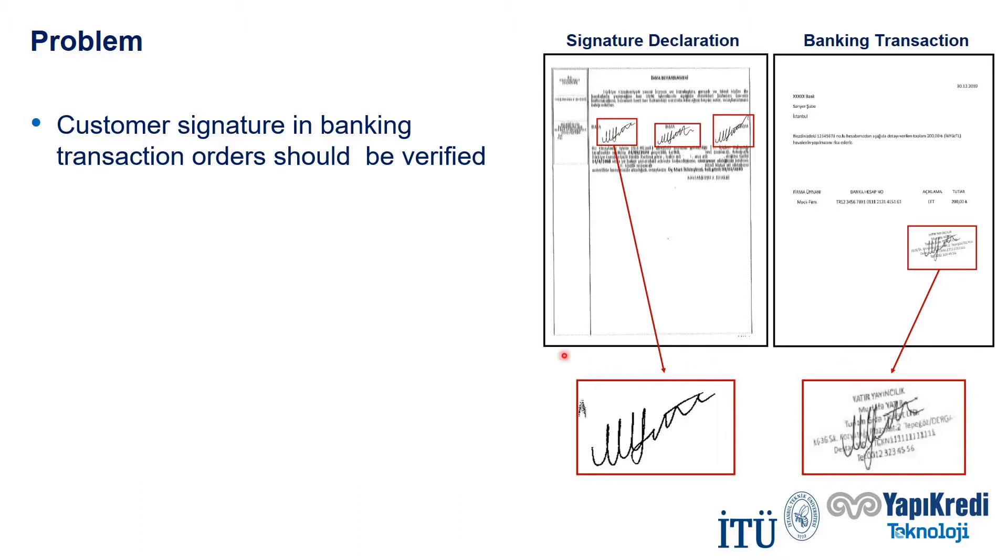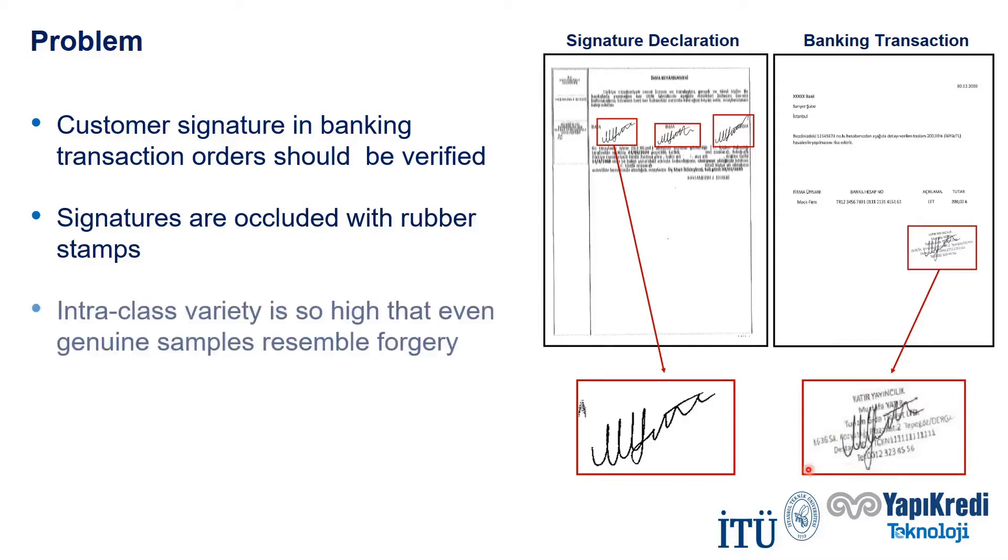Unlike the public signature datasets, most of the signatures are occluded in these documents, and the biggest reason of occlusion is the rubber stamps on signatures. Also, signatures in these documents have very high intra-class variety.